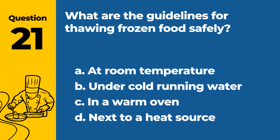Question 21. What are the guidelines for thawing frozen food safely? a. At room temperature. b. Under cold running water. c. In a warm oven. d. Next to a heat source. Answer: b. Under cold running water. The safe method to thaw frozen food is under cold running water or in the refrigerator, never at room temperature.